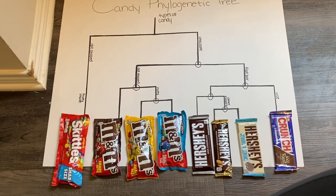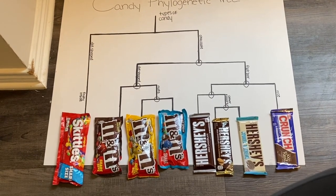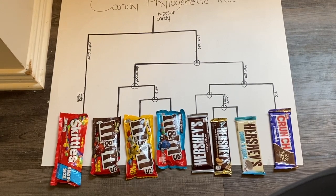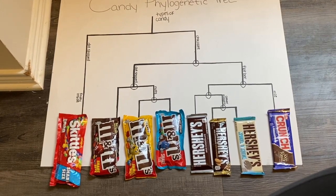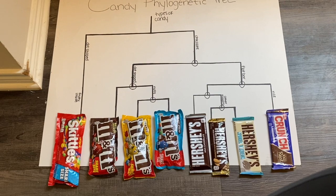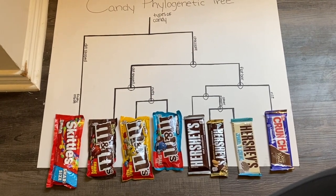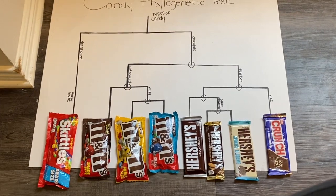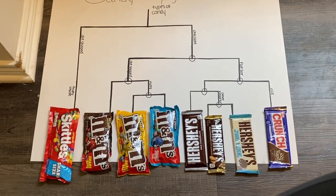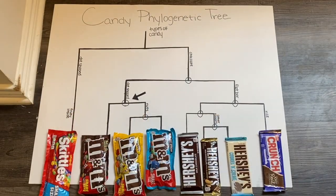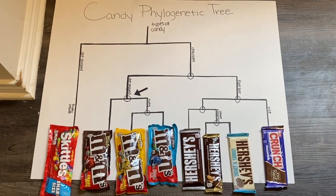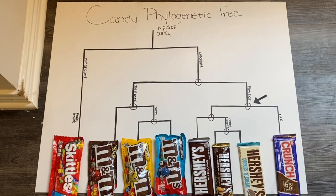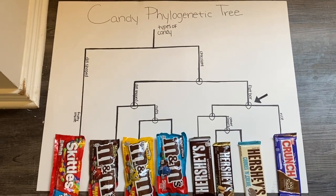This can be seen through internal nodes. The internal nodes, represented by the circles on the graph, are where the branching occurs and show the common ancestors to species, which is also known as a divergence. The tips of the lines drawn are the present, whereas the internal nodes are the past. These can be used to find the most common ancestor. For example, the common ancestor for original M&Ms and hazelnut M&Ms is here, and the common ancestor for Crunch Bar and Hershey's can be found here.